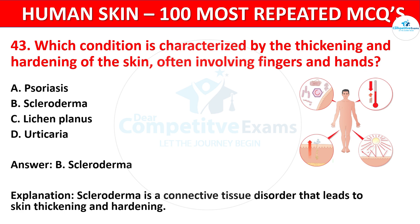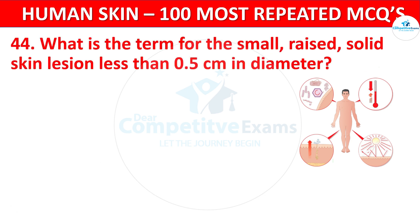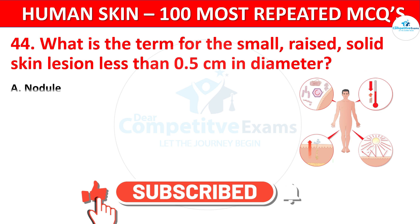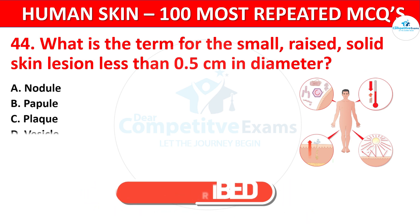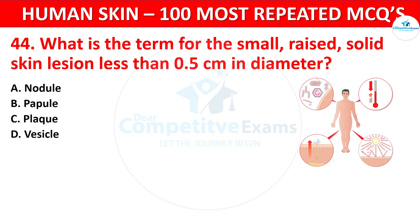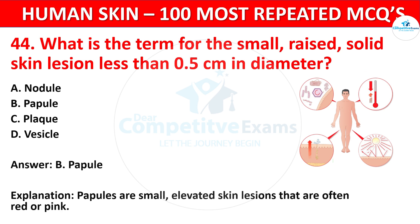Question 44. What is the term for a small raised solid skin lesion less than 0.5 cm in diameter? Your options: Nodule, Papule, Plaque, or Vesicle. The correct answer is Papule. Papules are small elevated skin lesions that are often red or pink.